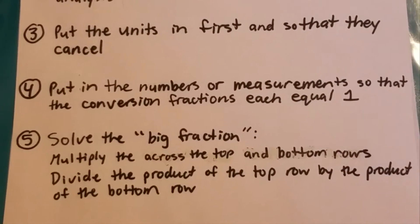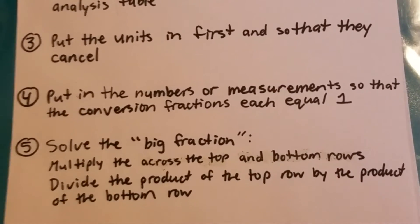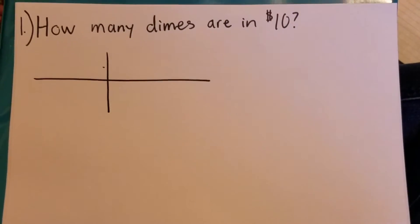You multiply across the top row and then multiply across the bottom row and divide those two numbers. I'm going to start off the examples a little bit easier.